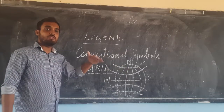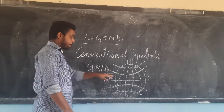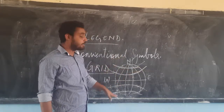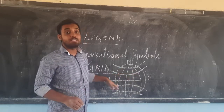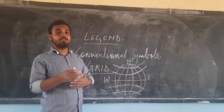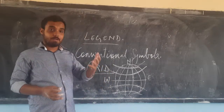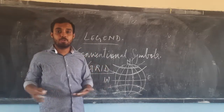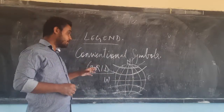Now, what is a grid? Grid is a network. When these horizontal and vertical lines intersect each other — when they cross each other — a block is formed, and that is known as a grid. How is the grid helpful to us? Each of these lines have numbers, and with the help of the numbers of latitudes and longitudes, we can easily locate a place on the globe as well as on the map.